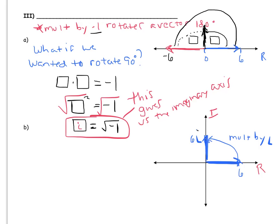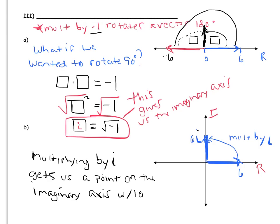So, let's note this. This is an important conclusion. Multiplying by i gets us a point on the imaginary axis with a length of 6 in a direction rotated 90 degrees counterclockwise.